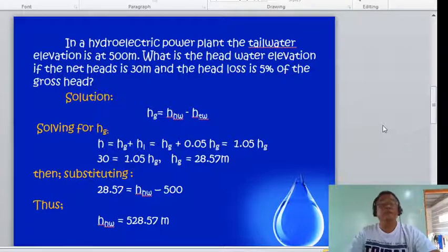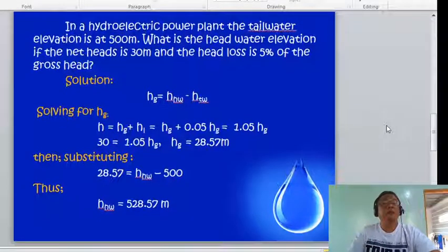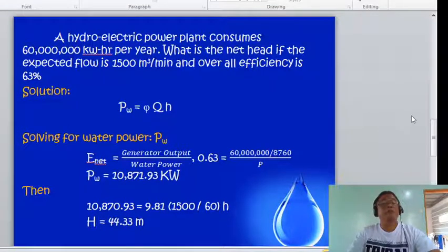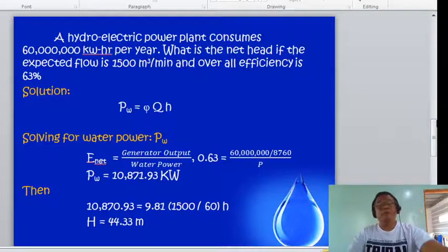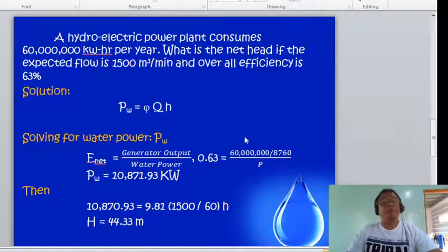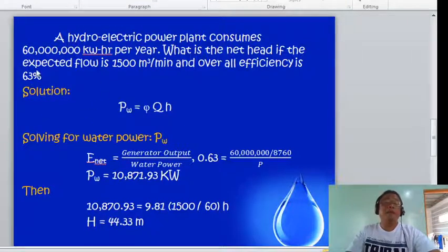Another example: A hydroelectric power plant consumes 60 million kilowatt hours per year. What is the net head if the expected flow is 1500 cubic meters per minute and overall efficiency is 63 percent? The basic formula for water power is Pw equals gamma Q h, where gamma is the unit weight of water multiplied by discharge multiplied by head.